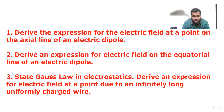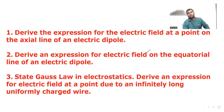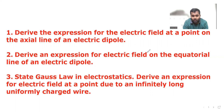The first question is: derive the expression for the electric field at a point on the axial line of an electric dipole. This question is taken from the first chapter. Number two is: derive an expression for electric field on the equatorial line of an electric dipole. This is the second question we can expect from the first chapter. The third question is: state Gauss's law in electrostatics and derive an expression for electric field at a point due to an infinitely long uniformly charged wire.